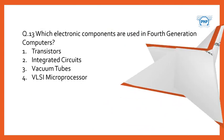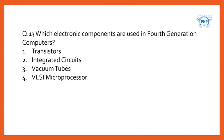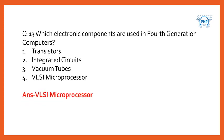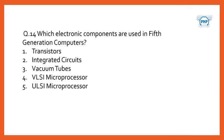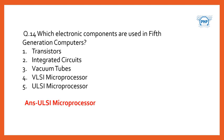Which electronic components are used in fourth generation computers? Options are transistors, integrated circuits, vacuum tubes, and VLSI microprocessor. The answer is VLSI microprocessor.